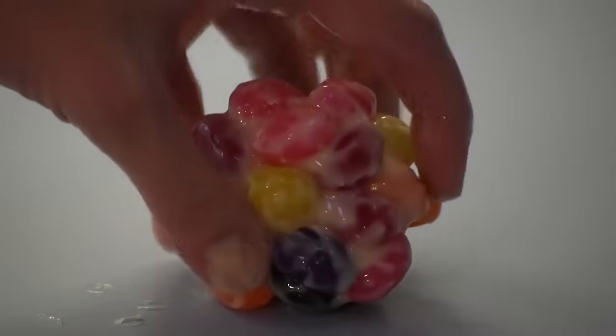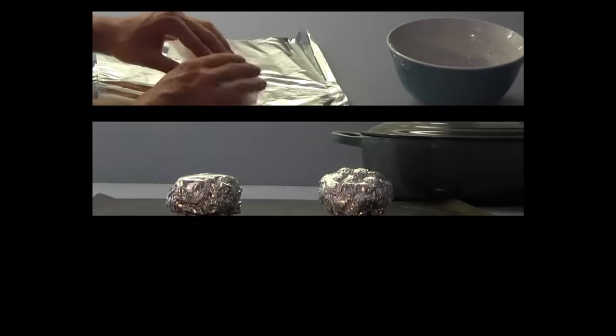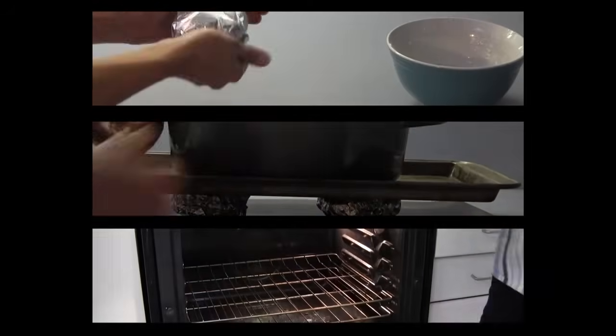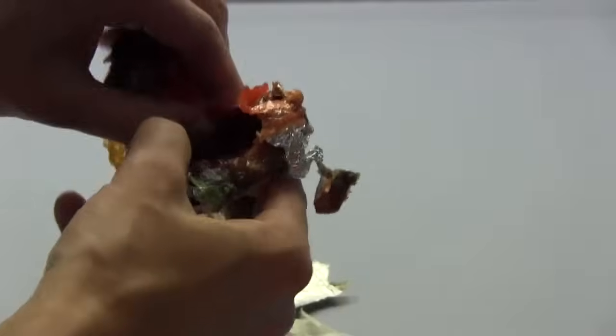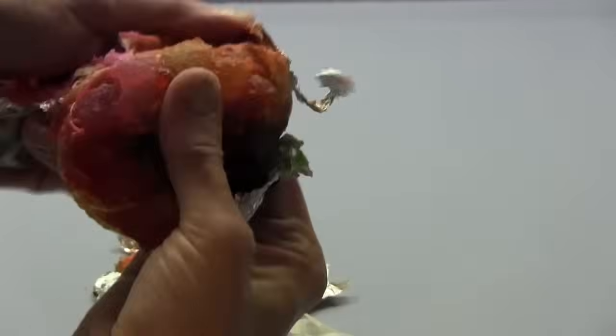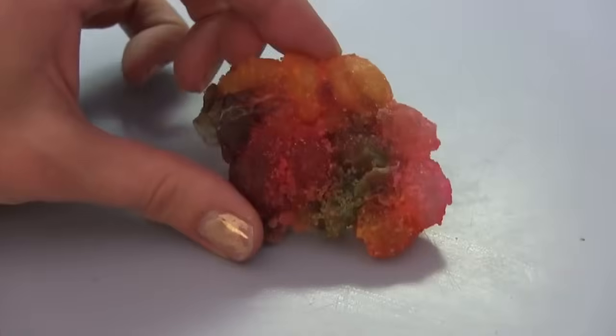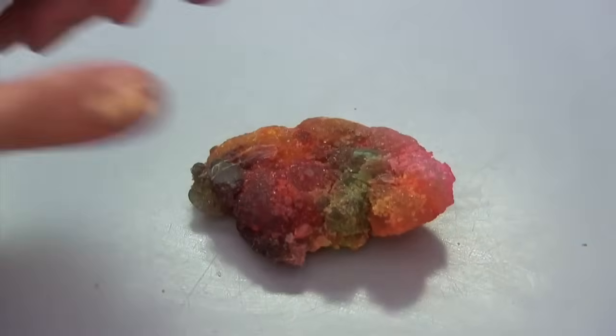Let's take our sedimentary jelly bean rock and turn it into a metamorphic one with heat and pressure. To add pressure, we'll put this heavy pot on top. For heat, we'll stick it in the oven for about 30 minutes. After it's cooled, you can see how our jelly bean rock has formed a more solid unit. However, you can still see the individual pieces of candy, but the structure has fundamentally changed.